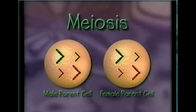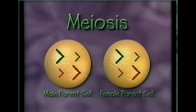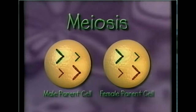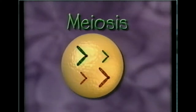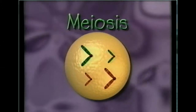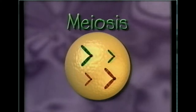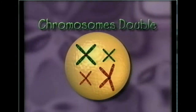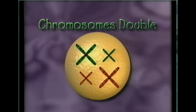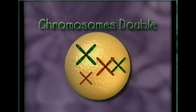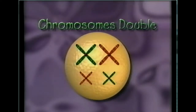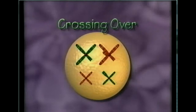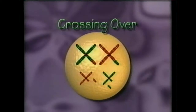Let's take a closer look at meiosis using, for simplicity, parent cells with four chromosomes. The first thing that happens during meiosis is that the chromosomes in a cell double or replicate. At this stage, chromosomes can exchange genes in a process called crossing over. Crossing over produces new combinations of genes and increases genetic diversity.